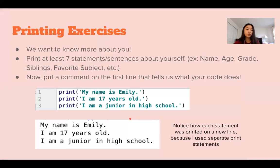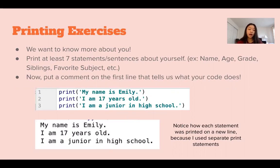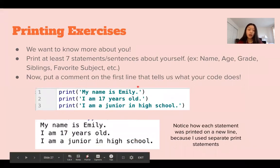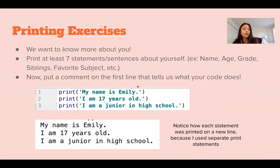That takes us to our printing and commenting exercises. You're going to use the print command we learned today and print at least seven statements about yourself. After you finish that, you're going to put a comment on the first line at the very beginning of your code telling us what your code does. That's it for today — I'll see you guys next time.